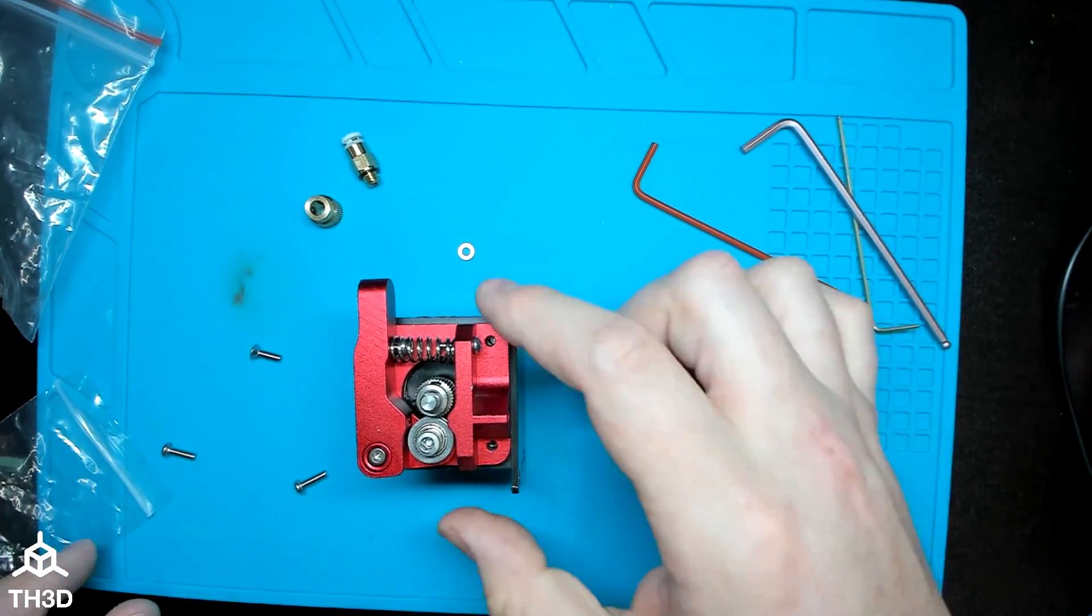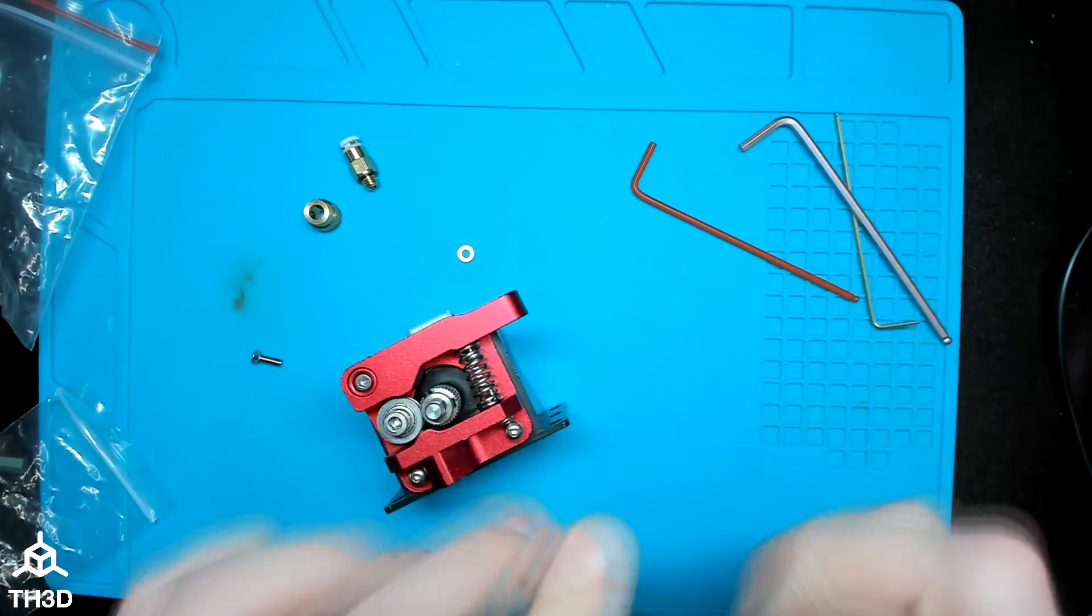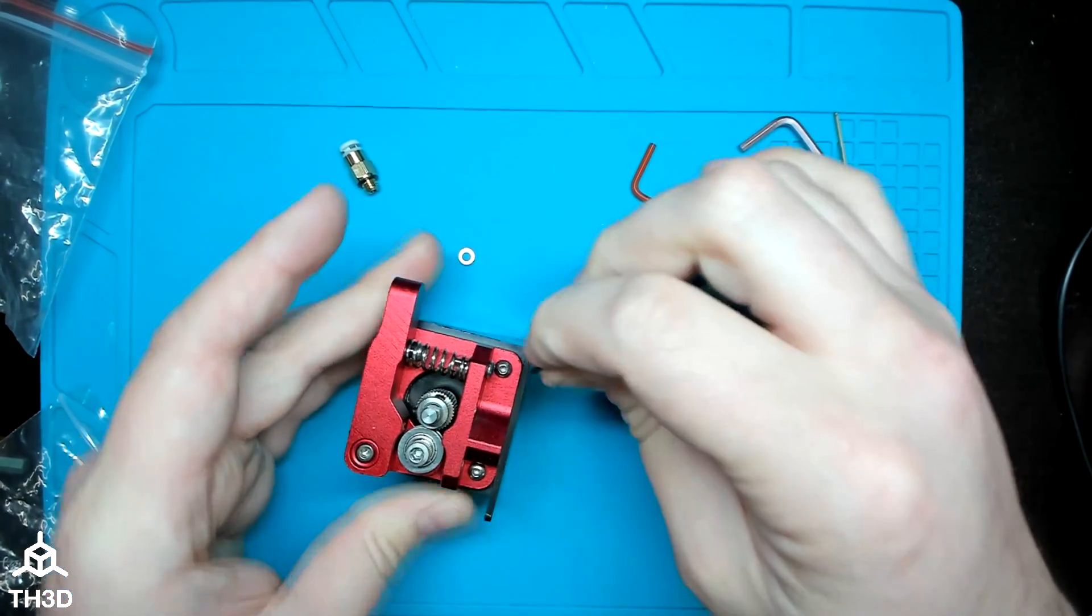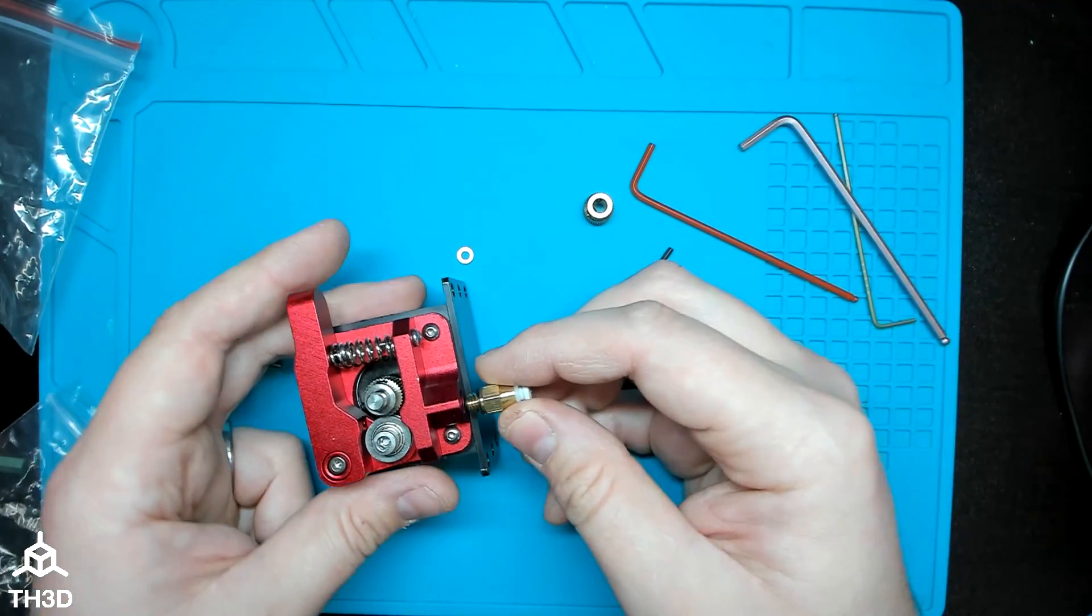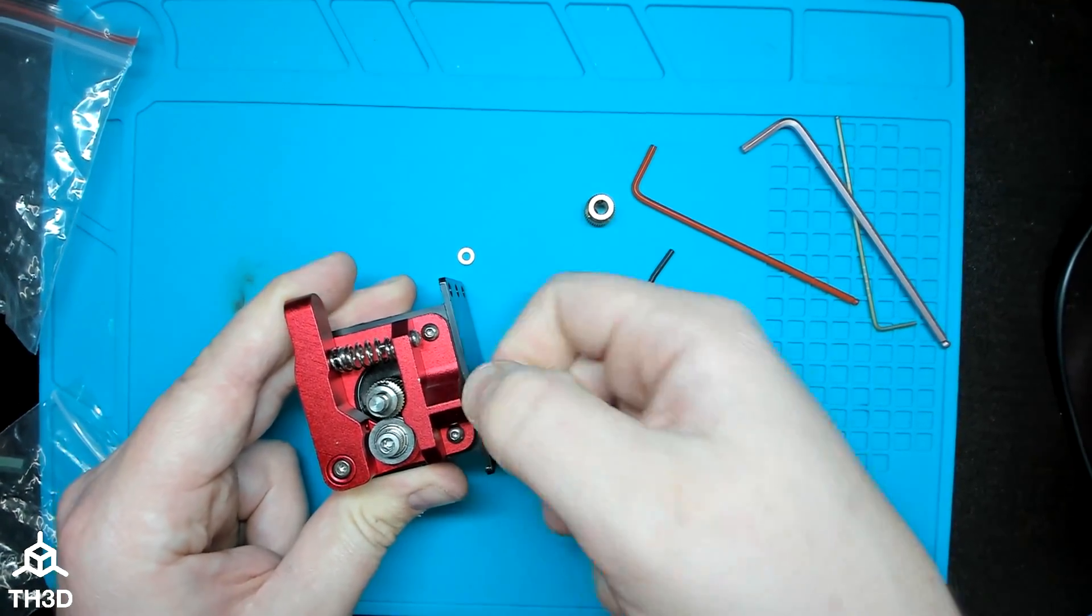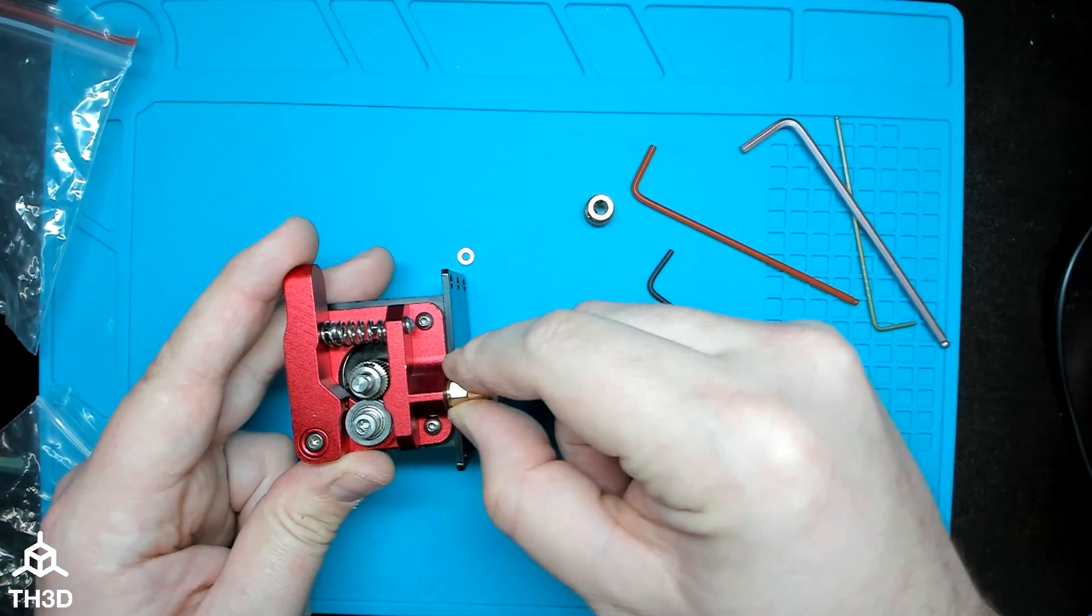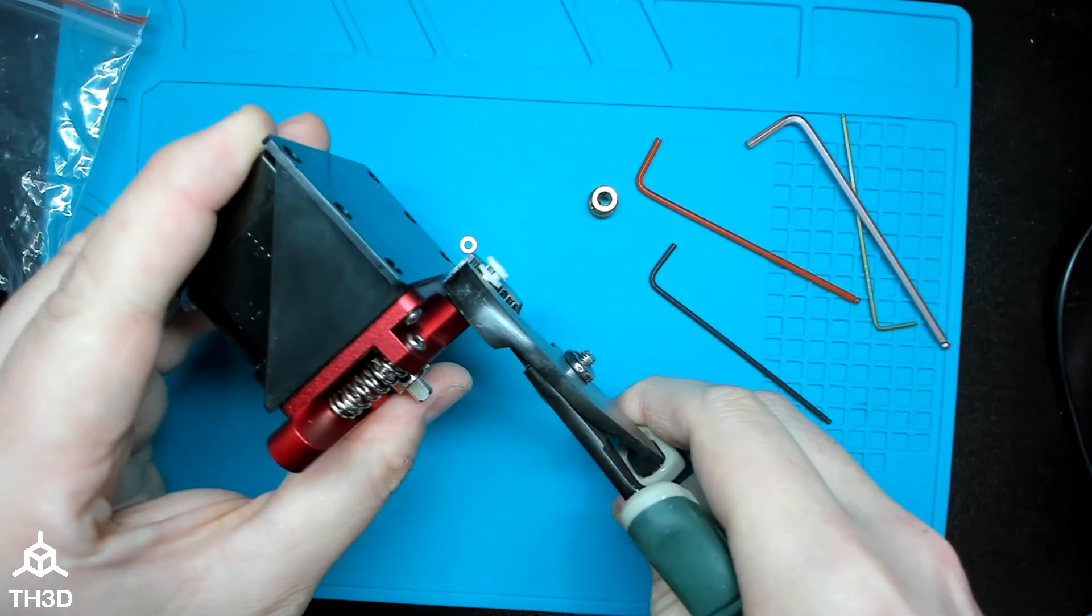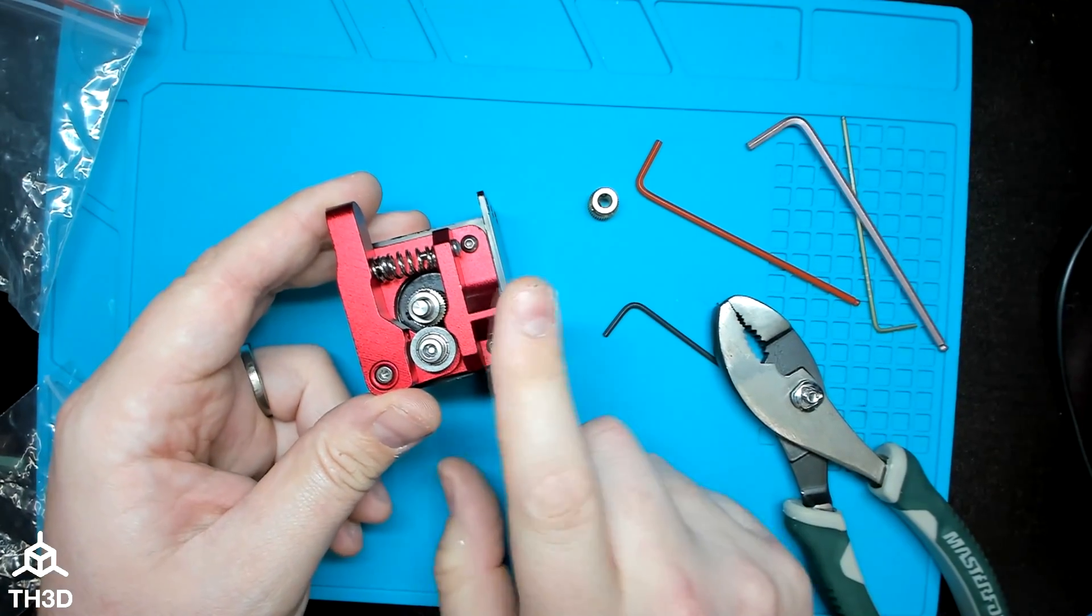The last step is to install the two bottom screws here. And these will also use the two millimeter hex wrench. Then you can use the included Bowden fitting to screw into the extruder. And I would recommend you take a pair of pliers and tighten this up. Again, do not over tighten this, but it should be snug.